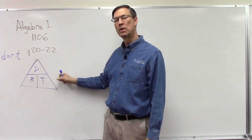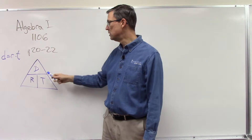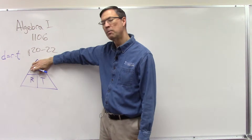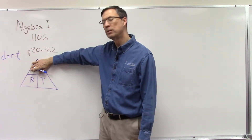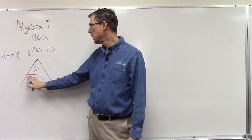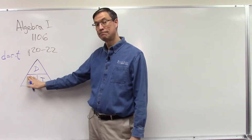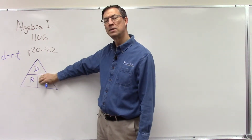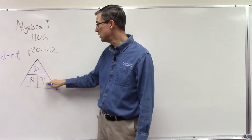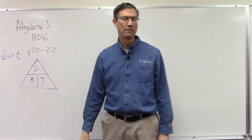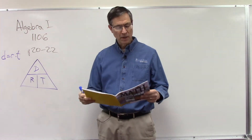Do you remember seeing this magic triangle before? We've used it in other applications. Distance is on the top, and we put rate and time on the bottom. Since rate and time are side by side, you multiply them to get the distance on top. If you ever wanted to find the rate, take distance divided by time. If you wanted to find the time, take distance divided by rate. So: distance over time equals rate, distance over rate equals time, or multiply rate and time to get distance.